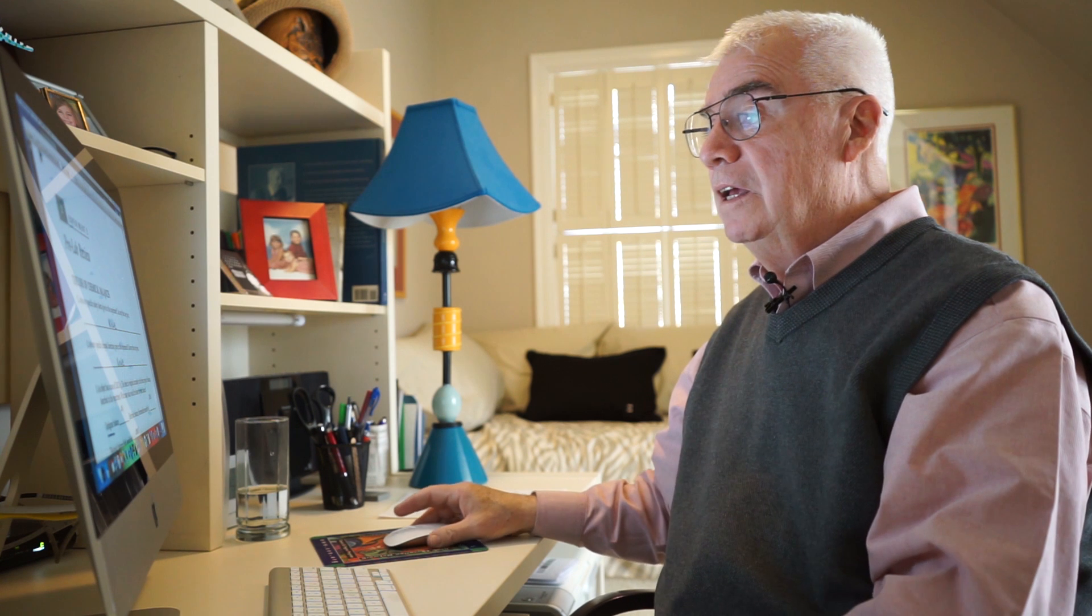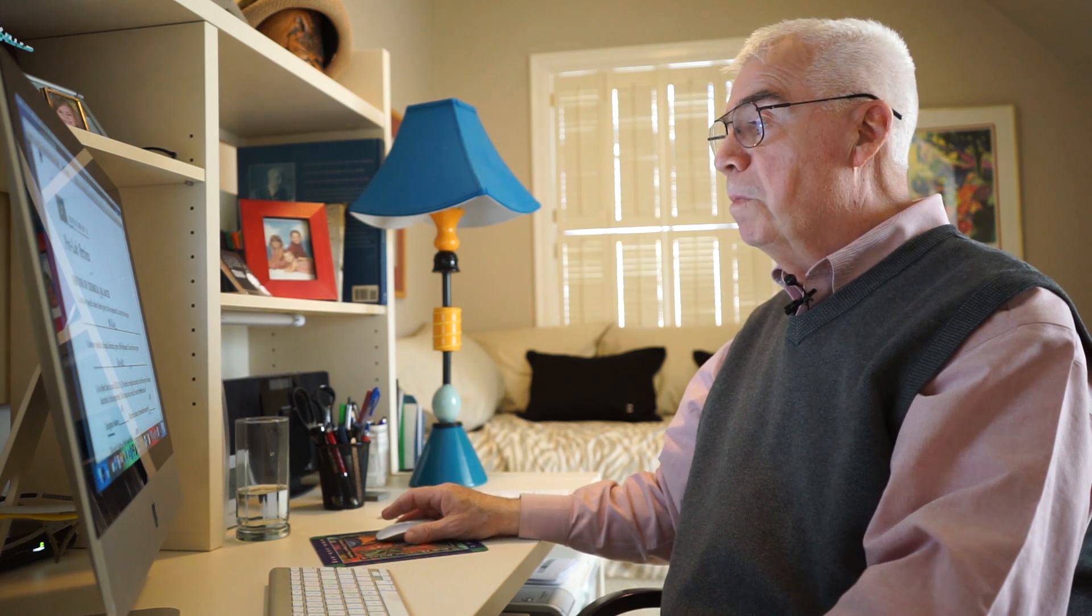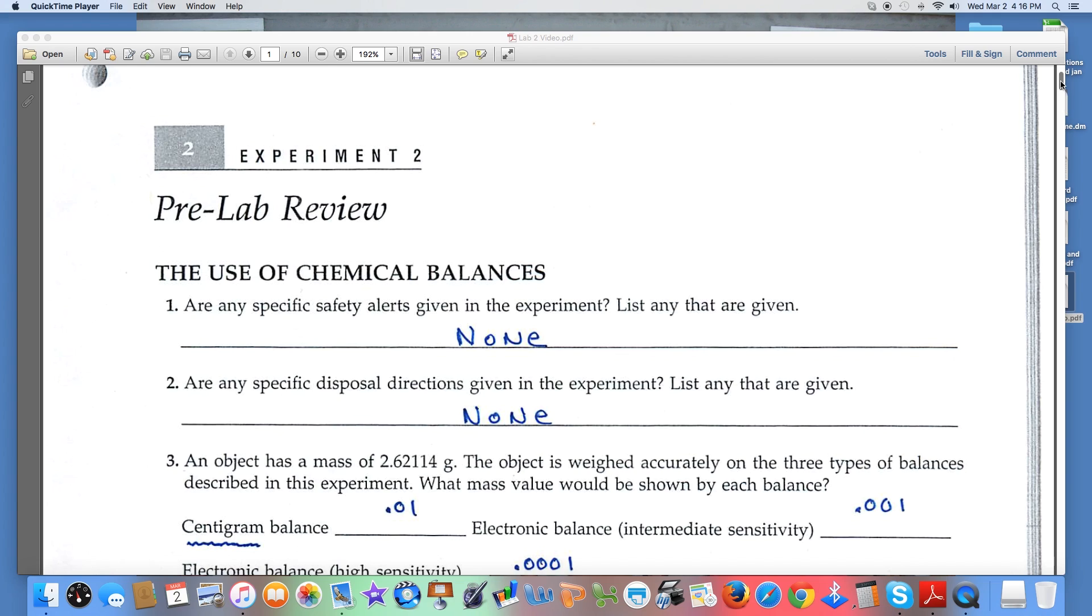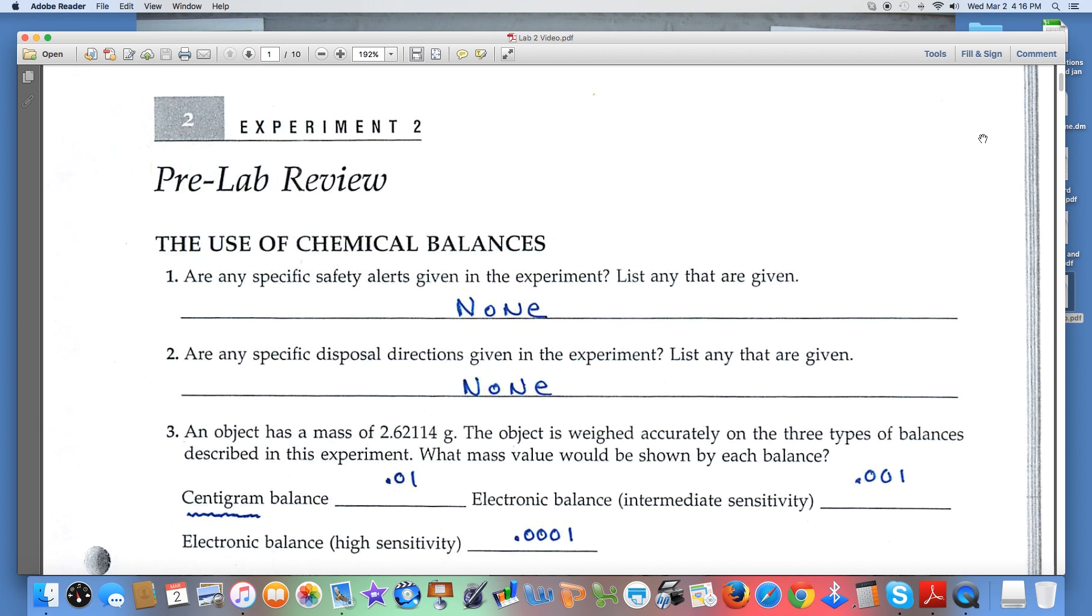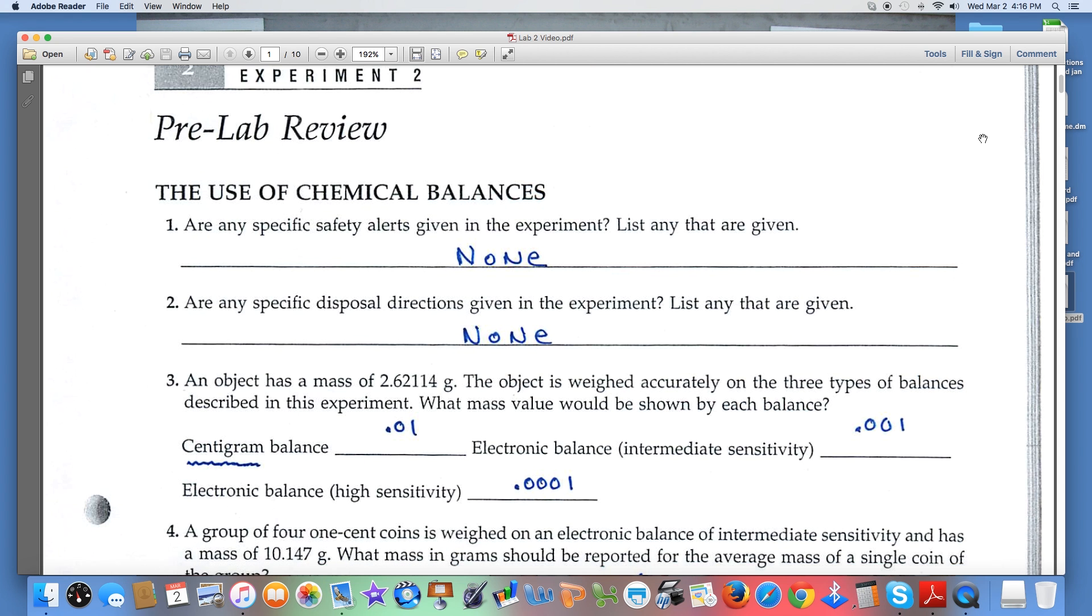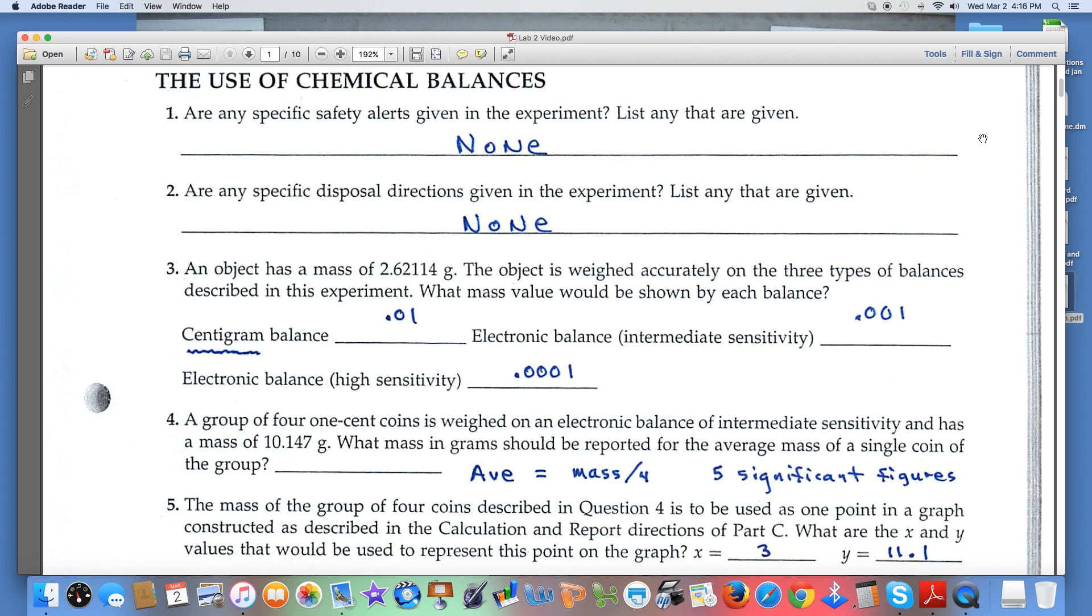Let's have a look at the data and report pages of experiment 2. It always begins with the pre-lab review. The first two questions are always concerning safety alerts and disposal directions, and of course there are none for this experiment. Question three in the pre-lab review says an object has a certain mass and we're using three different types of balances to measure it.